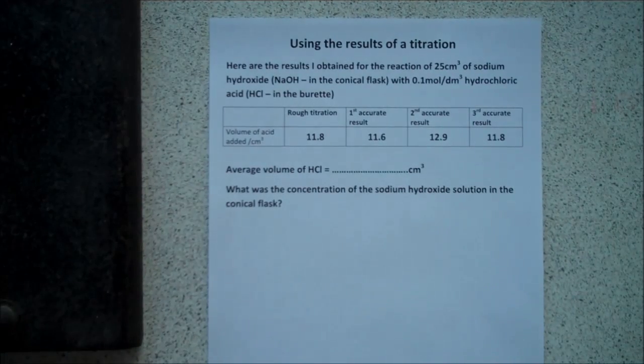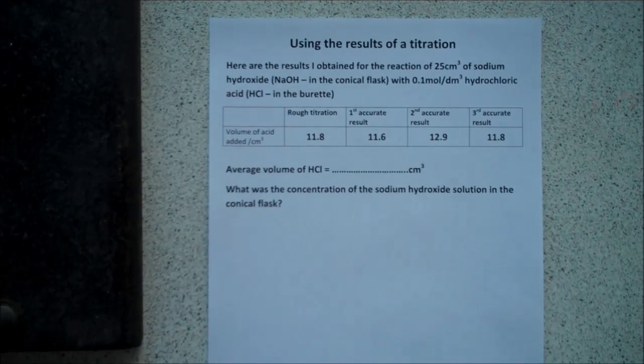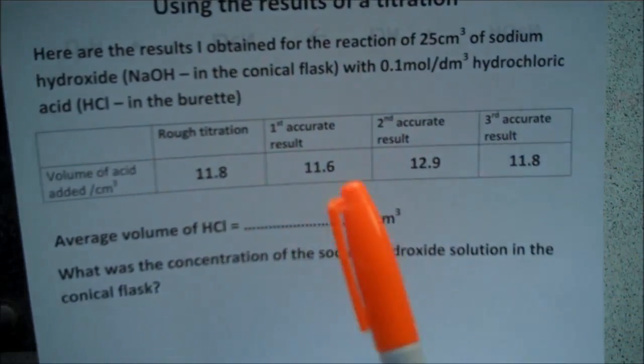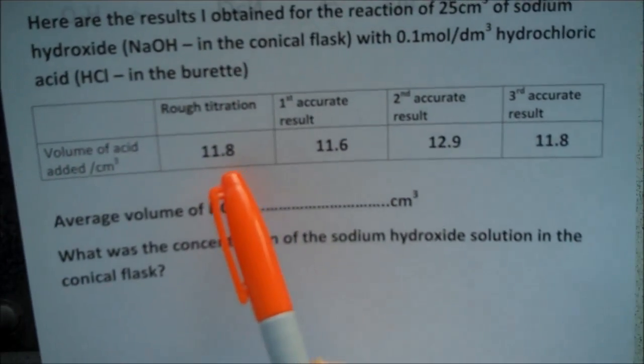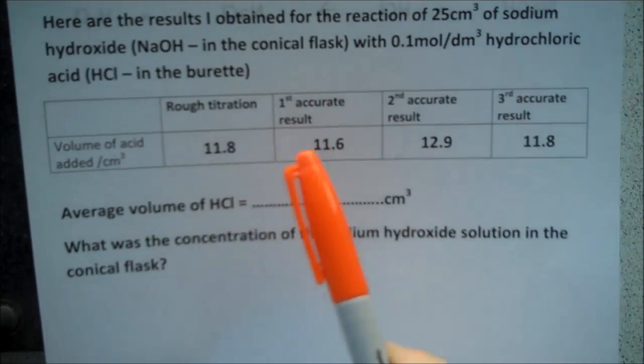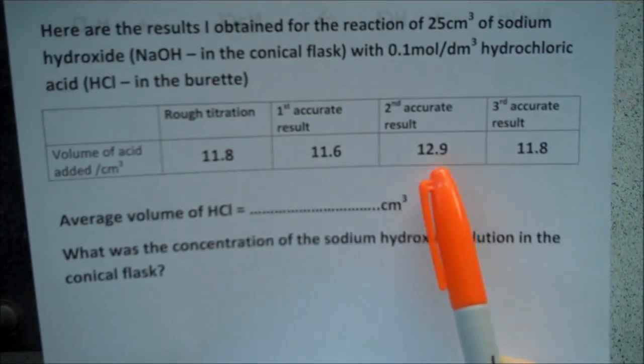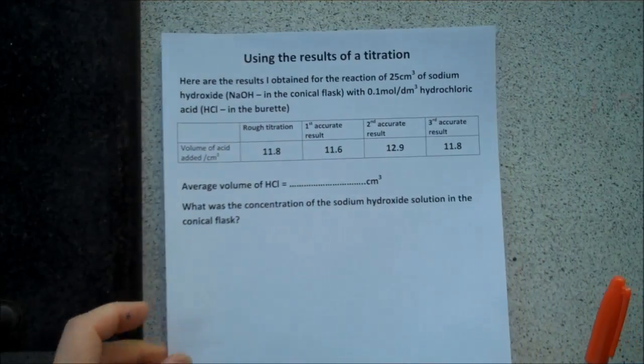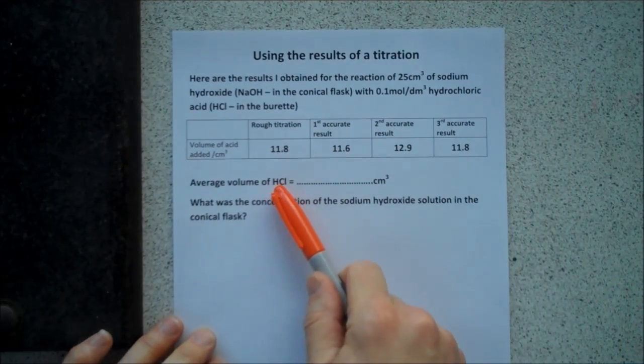So we've done our experiment, and we've repeated it, and we've got a series of results for our titration. And here is a set I've got for the experiment I've just done. I did a rough titration. I've got 11.8 centimetres cubed. I did a first accurate one, 11.6, 12.9, 11.8. And my first job, then, is to work out the average volume of hydrochloric acid I added.